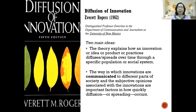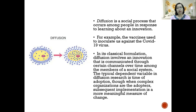The theory has two main ideas. First, it explains how an innovation, idea, product, or even practice is diffused over time through a specific population or social system. Second, the way in which innovations are communicated to different parts of society and the subjective opinions associated with the innovation are important factors in how quickly that innovation spreads.